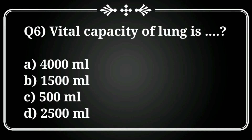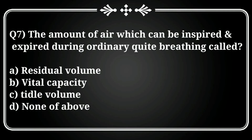Question 6: What is the vital capacity of the lungs? Options: A) 4000 ml, B) 1500 ml, C) 500 ml, D) 2500 ml. The correct answer is option A, 4000 ml. Vital capacity is the total volume of air that can be forcefully expired after a forceful inspiration.